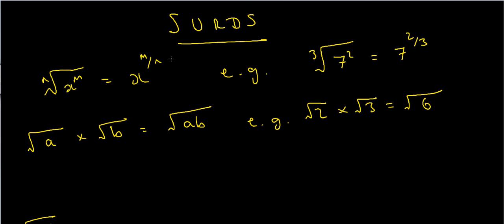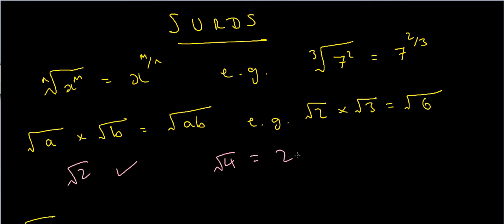In this video I want to talk about surds. To refresh your memory: if we can't simplify a number to remove a square root, cube root, or any kind of root, then it's a surd. For instance, the square root of 2 is a surd because I can't simplify it any further. However, the square root of 4 is not a surd, because that's the same as 2, since 2 times 2 is 4.